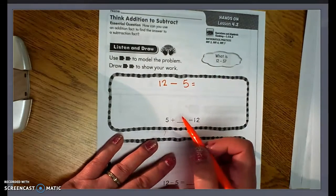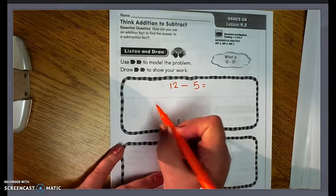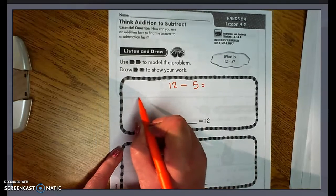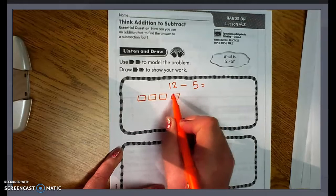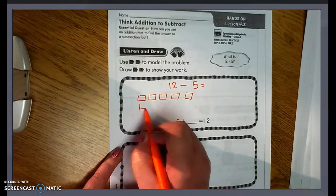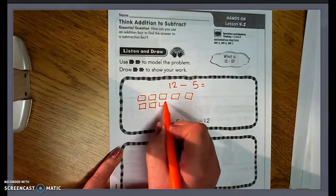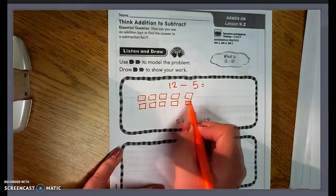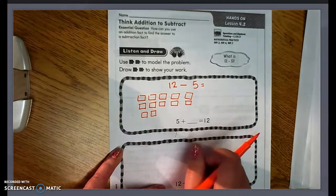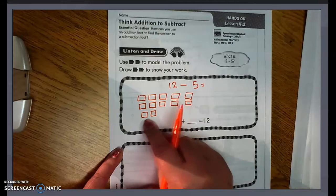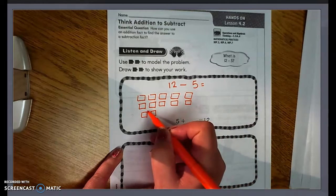So you need to draw a picture to go with your problem. So we have 12. So I have 10 here. We have our base 10. And we have 2 more for 12.